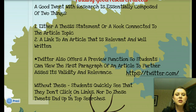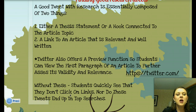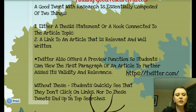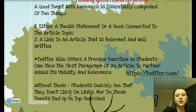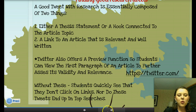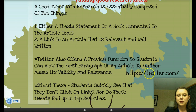So finding good research in tweets: a good tweet with research is essentially composed of two things — either a thesis statement or a hook connected to the article topic, and a link to an article that is relevant and well written. Twitter also offers a preview function so students can view the first paragraph of an article to further assess its validity and relevance. Without these elements, students quickly see that they don't click on links, nor do those tweets end up in top searches.